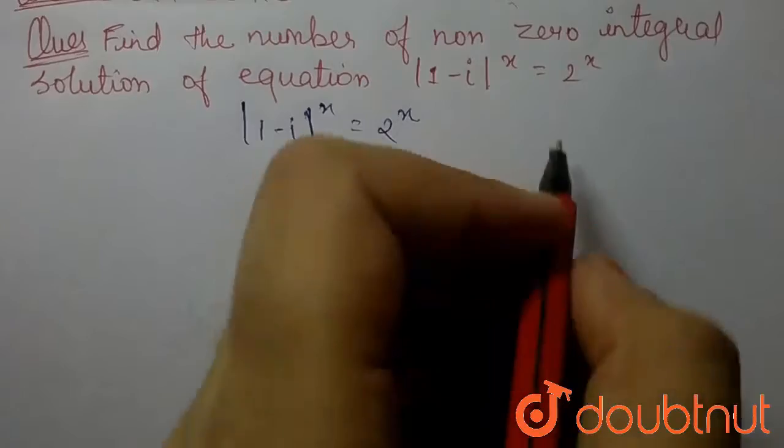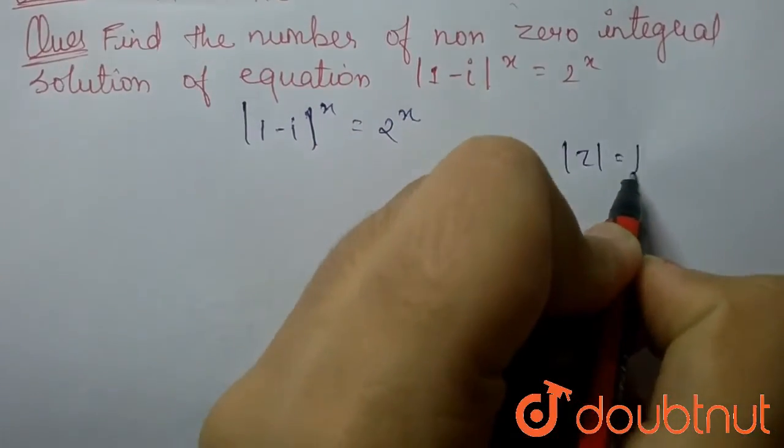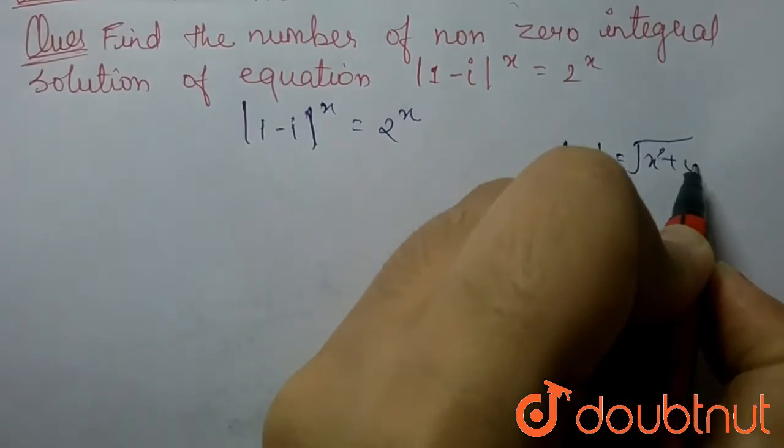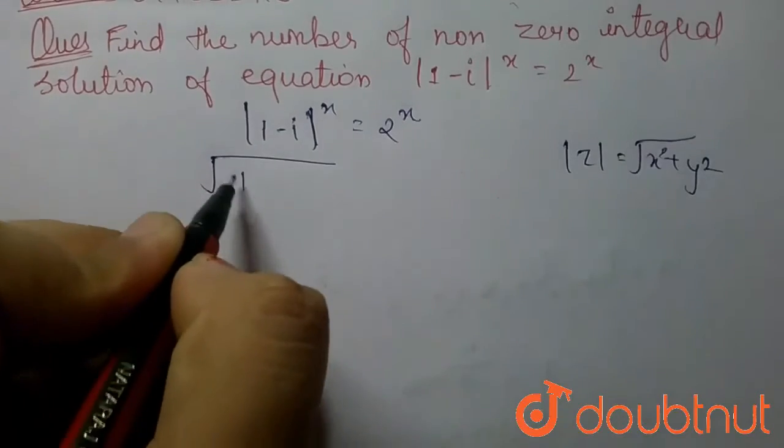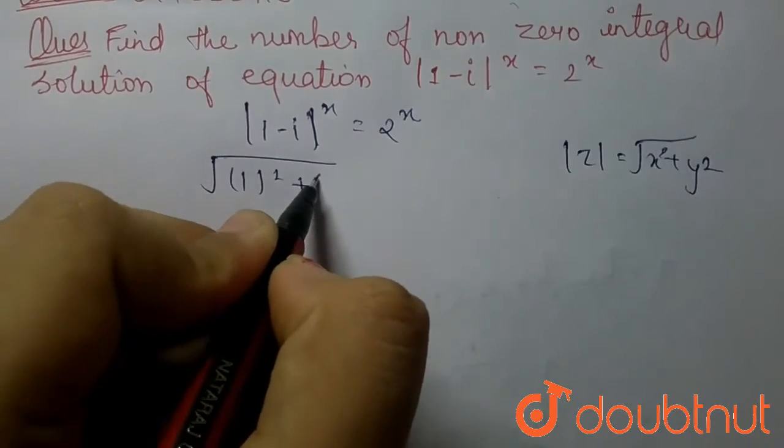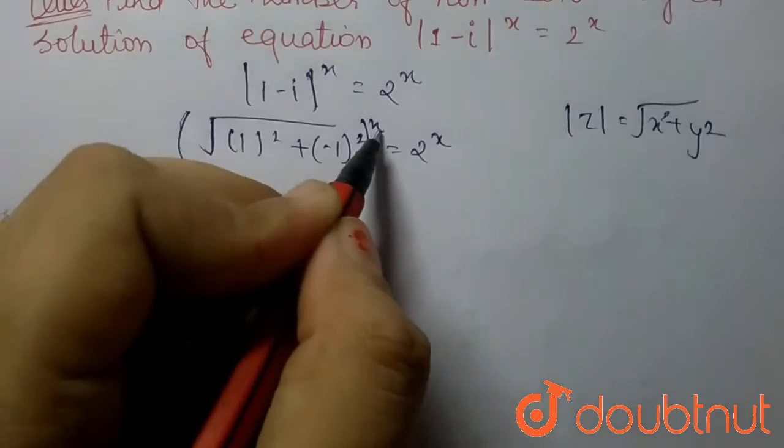From the modulus, the value of |z| equals square root of x squared plus y squared. So we can apply here. We get square root of 1 squared plus (-1)² whole, to the power x, equals 2 to the power x.